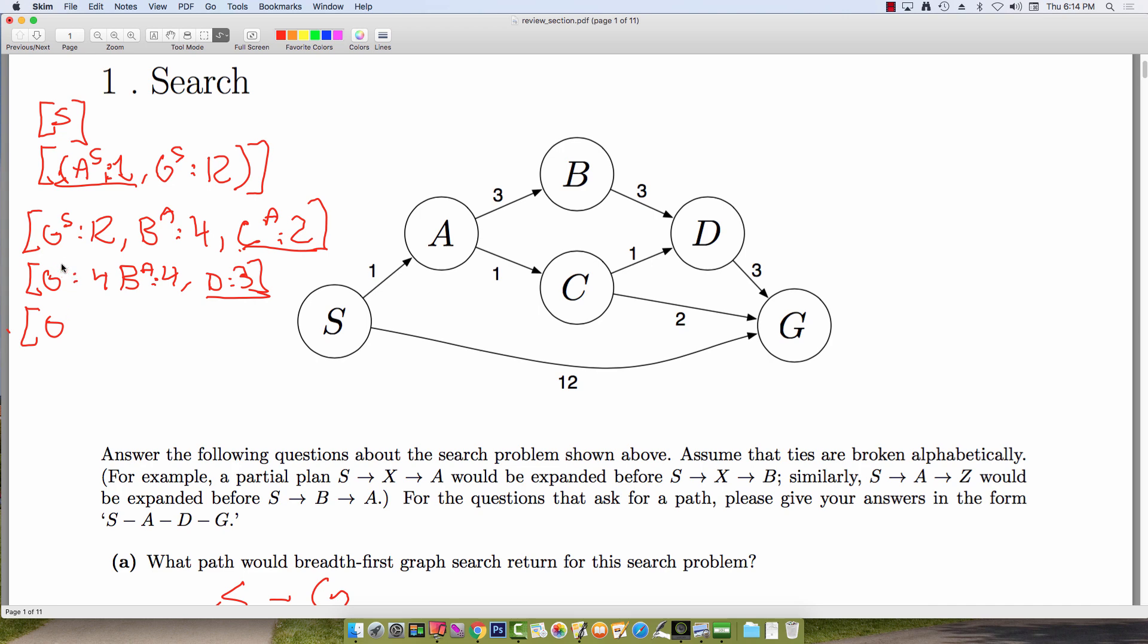At the last step, we had to update that G now came from C for that lowest cost. So in the fringe at the next step, we have G, which came from C with cost 4. B with cost 4. And then from D, we can now insert G into the queue with total cost 3 plus 3, which is 6. But we already see that G is in the queue with a cost of 4 coming from C. And so we don't have to do anything.